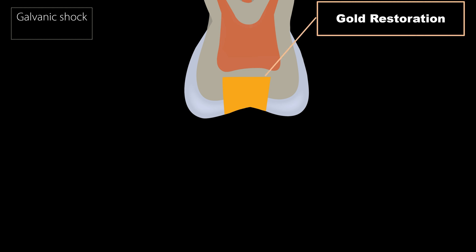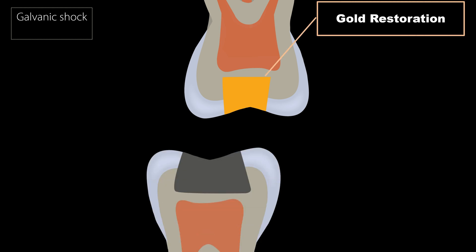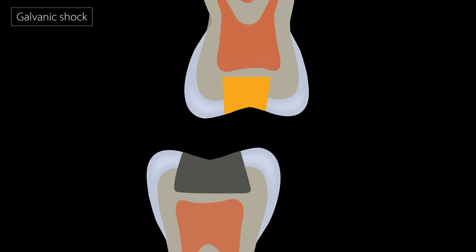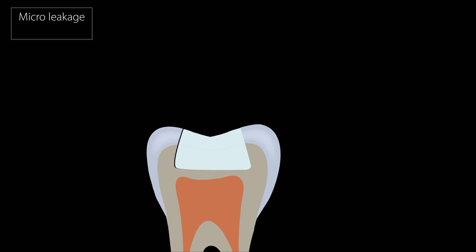Another reason is forces transmitted through the restoration. During masticatory load, forces are transmitted through the restoration to nearby tissues. Though dentine takes up most of the load, some force can pass to the dental pulp and cause damage. Next comes galvanic shock: when two dissimilar metals, such as a gold restoration and an amalgam restoration, come into contact, ionic exchange takes place. This causes a flow of electrons from one restoration to the other, felt by the patient as a sudden jolt of pain. To prevent this, a non-metallic restorative material should be used as a base.